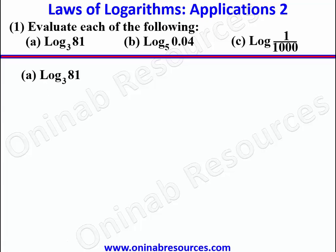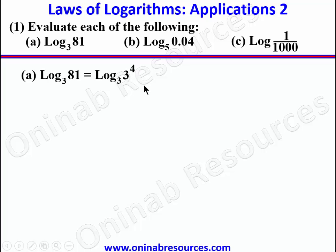The method we are going to employ is based on expressing the number as an index form of the base. For part a, 81 is 3 raised to power 4, so we have log base 3 of 3 to the power 4. Applying the law that brings the power down as a coefficient, we have 4 log₃(3). Since the logarithm of any number to its own base is 1, we get 4 times 1, which equals 4.